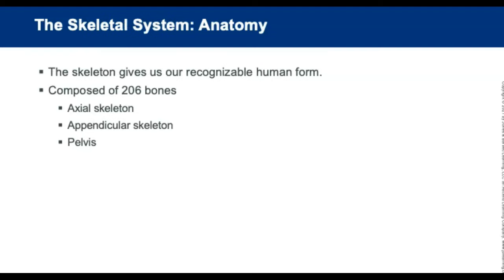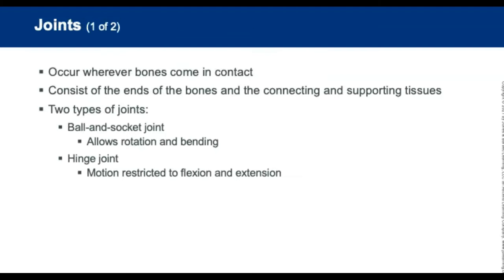The skeletal system is made of bones and joints. Joints occur wherever bones come in contact. Ligaments are fibrous tissues that connect bone to bone and help stabilize the joint. Cartilage is semi-rigid, flexible tissue that covers and cushions the ends of the bones. Tendons attach bone to muscle. Symphysis joints allow only slight movement. The bone ends of the joint are held together by fibrous sacs called a joint capsule. Articular cartilage allows the ends of the bones to glide easily. Synovial membranes are the inner lining of a joint capsule and produce synovial fluid, which allows the bone ends to glide over each other.